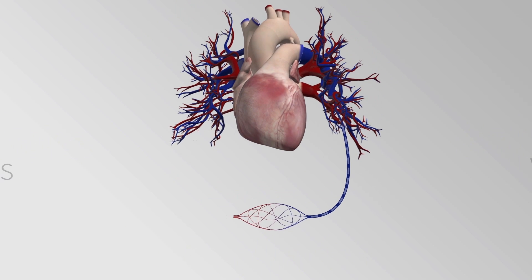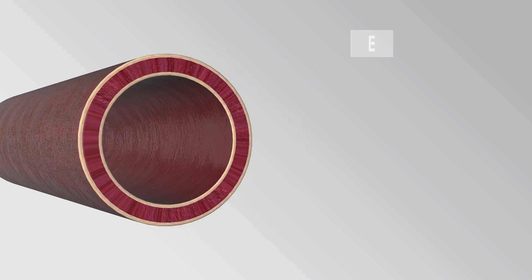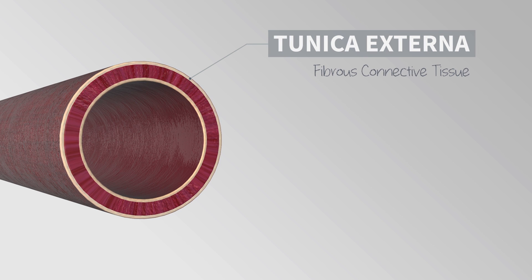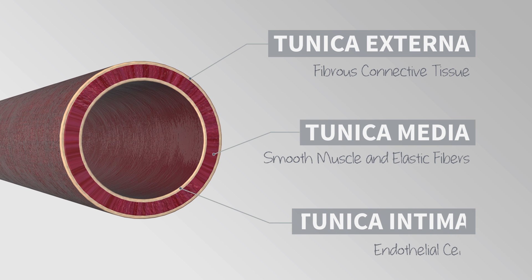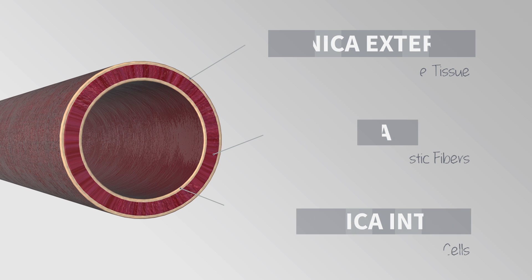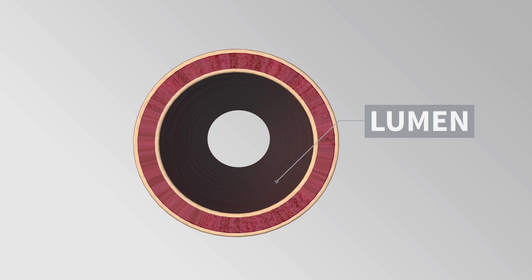The walls of the blood vessels have three layers. The outer layer is called the tunica externa and is made of fibrous connective tissue. The middle layer is called the tunica media and is made of smooth muscle and elastic fibers. The inner layer is called the tunica intima and is made of a single layer of cells called the endothelial cells. The lumen is the hollow cavity bordered by the walls of the blood vessel.